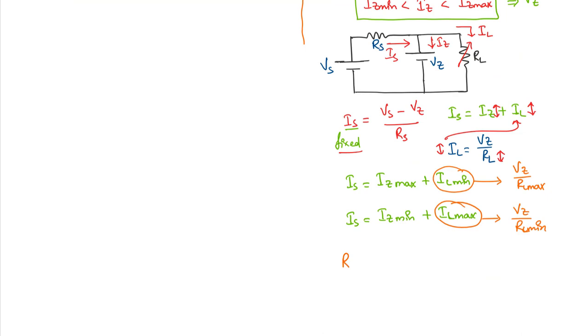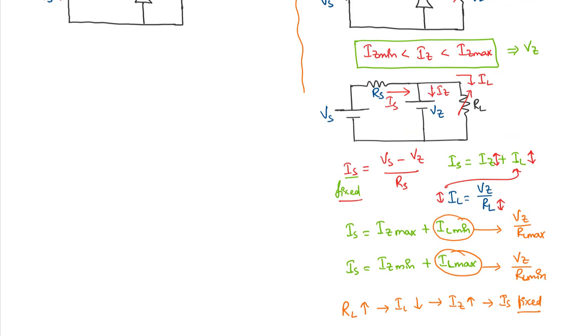So we can write that RL increases, which will result in Il decreasing. Because Il decreases, Iz will increase but overall Is will be a fixed value. All this is based on the assumption that we are maintaining the current flowing through the zener diode is in between Iz min and Iz max so that it is in the breakdown region of operation.